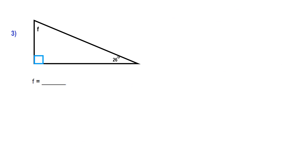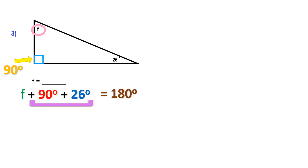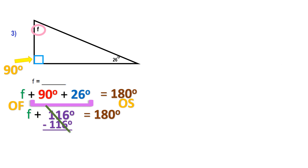Question 3 gives us only one measurement: 26 degrees. I'm looking for F. There's also a blue box, which indicates a right angle — 90 degrees. Write that down. Now write the expression: F plus 90 plus 26, set equal to 180. Do the math: 90 plus 26 is 116. So F plus 116 equals 180. Back to algebra — I'm adding 116, so subtract 116 from both sides to isolate F.